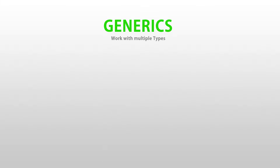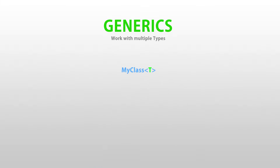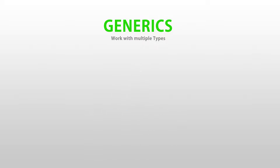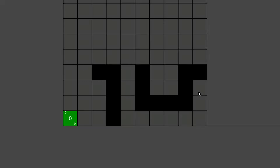In this video, we're going to learn about generics in C#. This is an extremely powerful feature, so you can build a specific class and make it work with any type. For example, I use generics extensively when making the grid system, so that each grid position can hold whatever custom data you want.